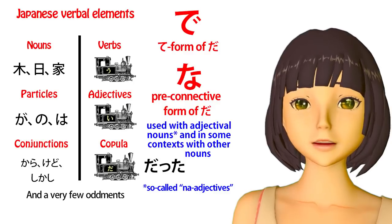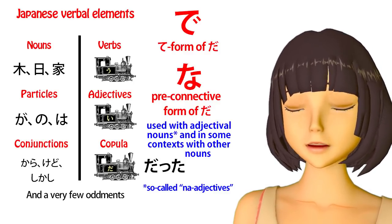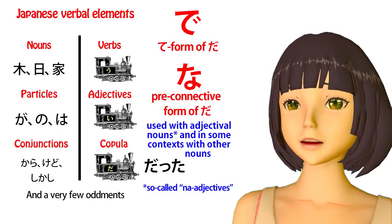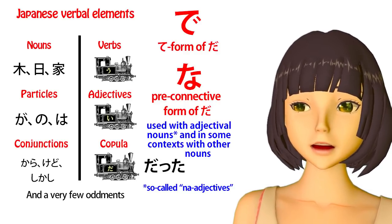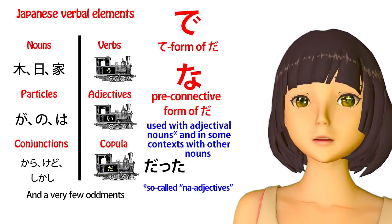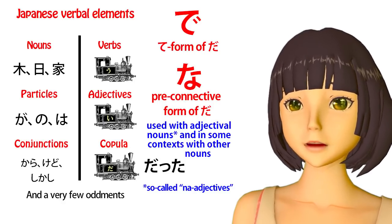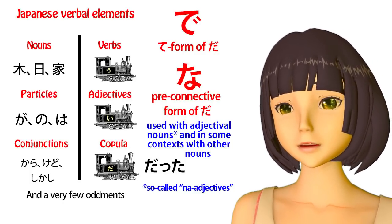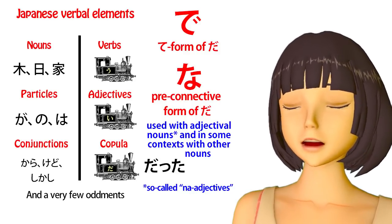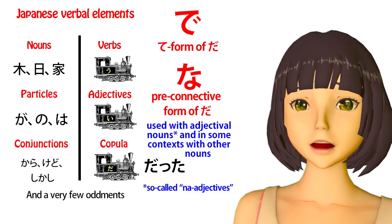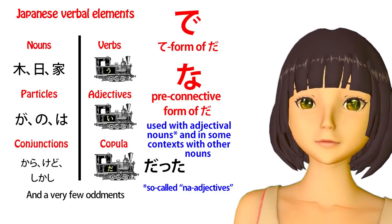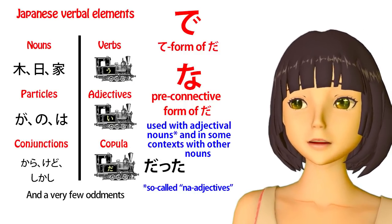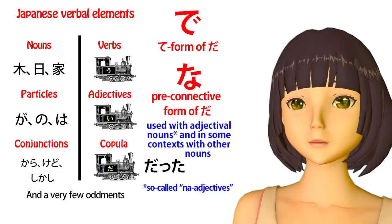If we want to chain two adjectival nouns together, we use the te-form of the copula — just the same as what we do with adjectives. If we want to say 'Sakura is small and pretty,' we say Sakura ga chisaku te kirei da. If we want to say 'Sakura is pretty and small' — pretty, kirei, is a noun, an adjectival noun; we know it's a noun because it can be written with all kanji — we say Sakura ga kirei de chisai. If we want to say 'Sakura is genki and pretty,' we say Sakura ga genki de kirei da. We've done exactly what we do with adjectives: to chain two together, we put the first one into the de form.